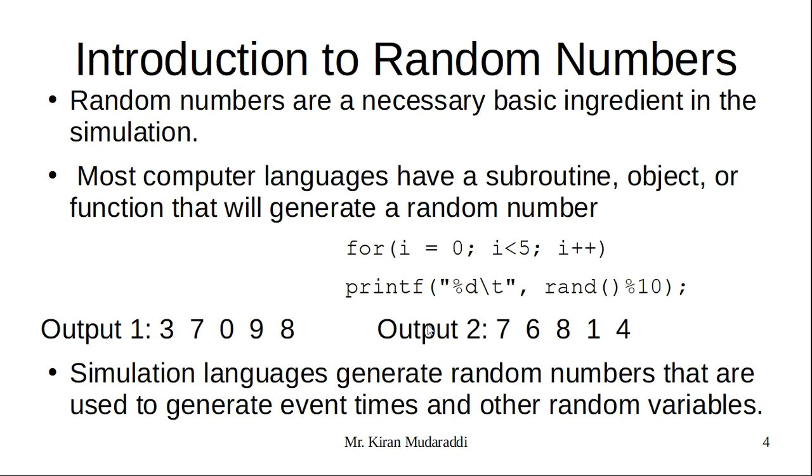Most computer languages have built-in functions or subroutines to generate random numbers. Let's take an example of a C program. rand is a built-in function that generates random numbers automatically. When I run this particular code for the first time, I got five random numbers: 3, 7, 0, 9, 8. If I run it a second time, I got different numbers.